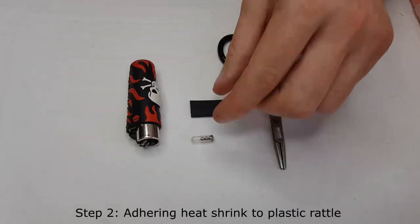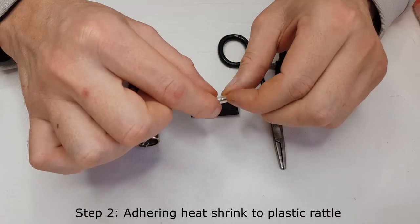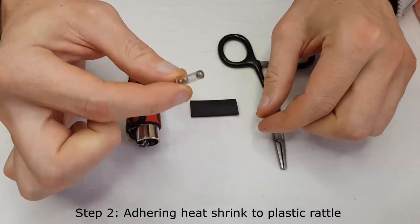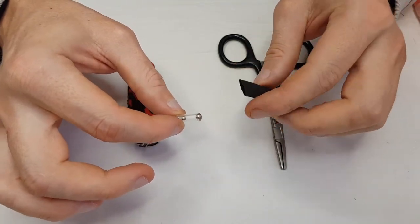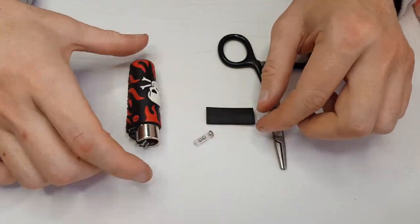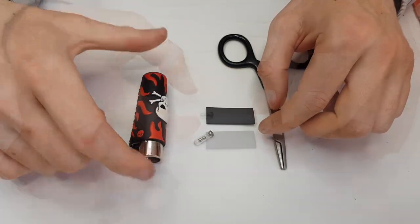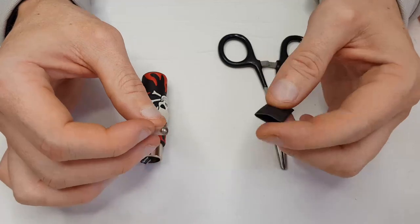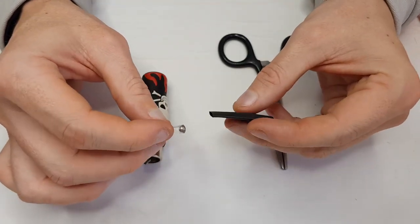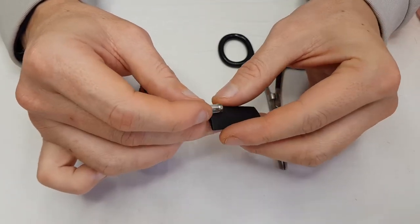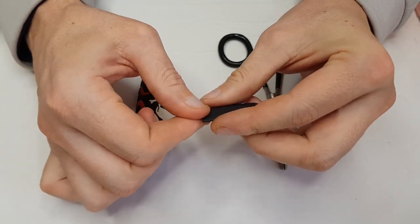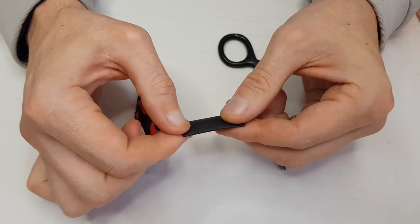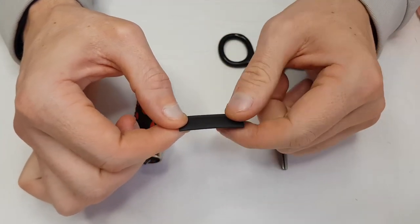The next step after trimming the rattle with the side cutters is we're going to place the rattle inside the shrink tubing and we're going to heat it up accordingly with a lighter. Here I've cut the appropriate length of shrink tube and I'm going to place the rattle in such a way that I'm going to have a little bit of a tag end on the one side and a nice long tag end on the other.